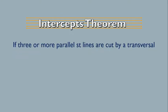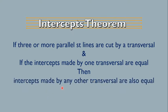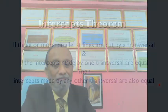If three or more parallel straight lines are cut by a transversal, and if the intercepts made by one transversal are equal, then the intercepts made by any other transversal are also equal. I think this you must have observed — if you look at the windows in our houses, in the classrooms, you can easily understand and explain this to students.